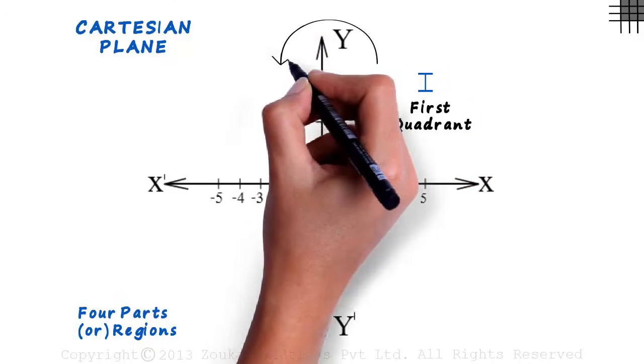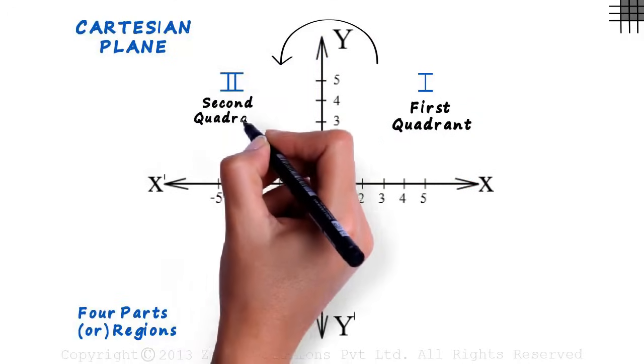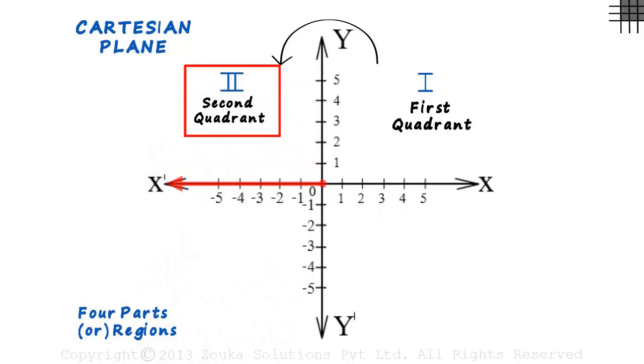Moving in the anti-clockwise direction, we name this quadrant the second quadrant. In this quadrant, the X coordinates are negative, while the Y coordinates are positive. So remember, for the first two quadrants, the Y coordinates are positive.